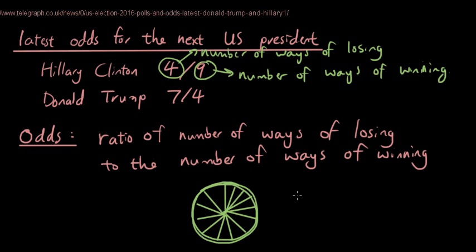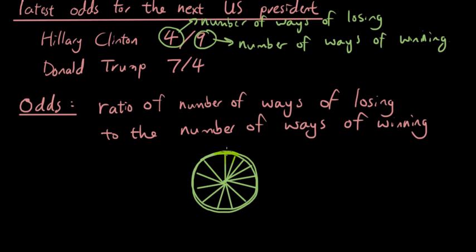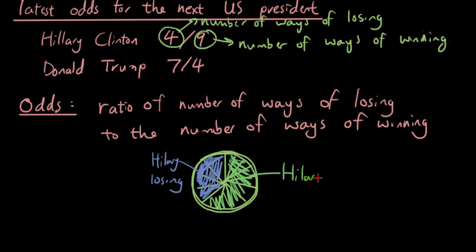I know that they don't seem equal right now, but pretend they're equal. That means that four of these slices, let's highlight it with a different color, four of these slices will represent Hillary losing, and nine of these slices will represent Hillary winning.